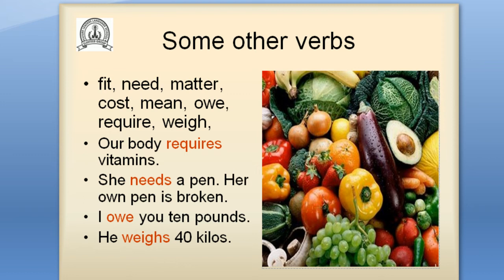Type 5 — some other verbs. You have to study them by heart: fit, need, matter, cost, mean, owe, require, weigh. For example: our body requires vitamins. She needs a pen. Her own pen is broken. I owe you 10 pounds. He weighs 40 kilos.